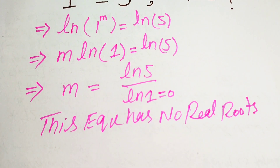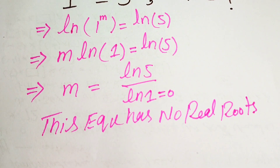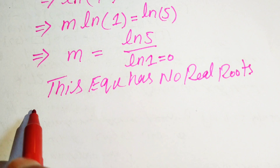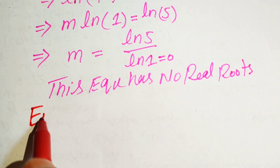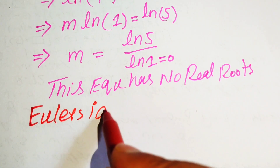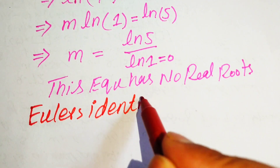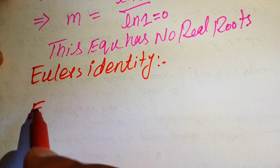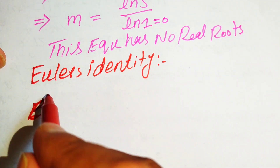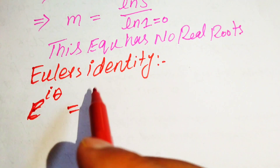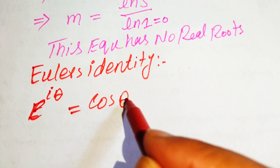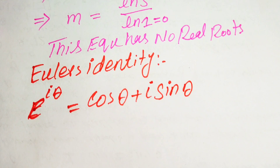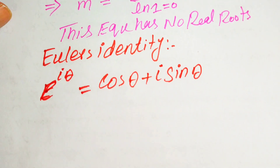We now move towards finding these roots of the given equation. We use Euler's identity, which is stated as e to the power of iota theta equals cos of theta plus iota sin of theta. This is known as Euler's identity.